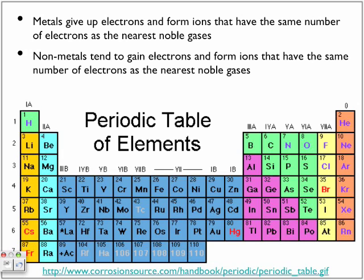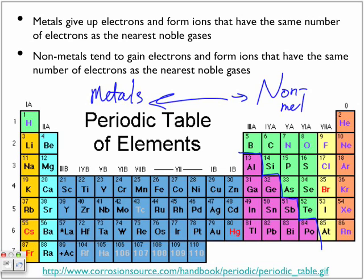Metals give up electrons and form ions that have the same number of electrons as their nearest noble gas. The aluminum ladder on the periodic table separates the metals from the non-metals. Metals have a tendency to give up electrons, forming positively charged cations. Non-metals, on the other hand, gain electrons forming anions — negatively charged ions.